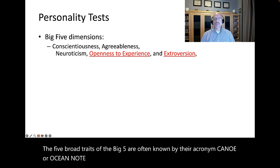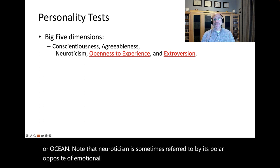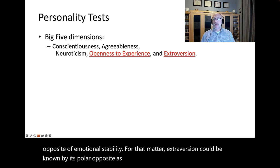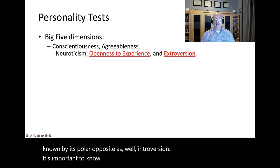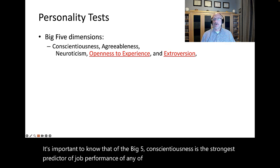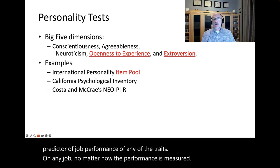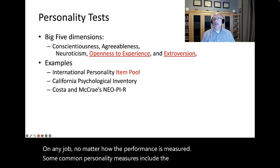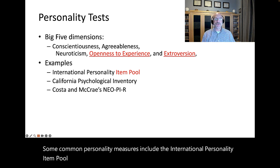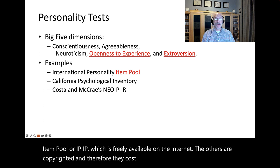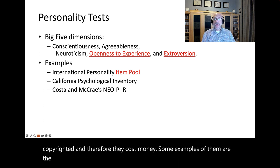Note that neuroticism is sometimes referred to by its polar opposite of emotional stability. It's important to know that of the Big Five, conscientiousness is the strongest predictor of job performance of any of the traits on any job, no matter how the performance is measured. Some common personality measures include the International Personality Item Pool, or IPIP, which is freely available on the internet. The others are copyrighted, and therefore they cost money. Some examples of them are the California Psychological Inventory, as well as Costa and McRae's NEO-PI-R.